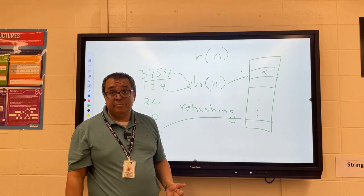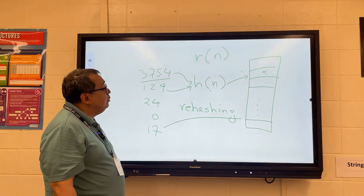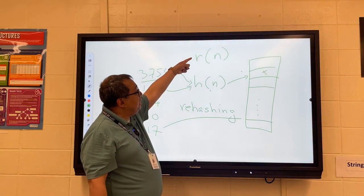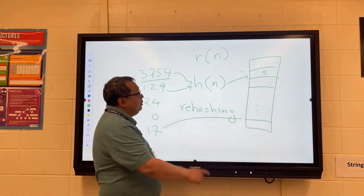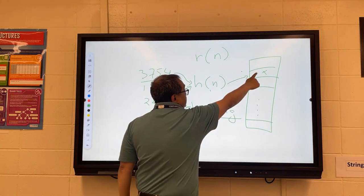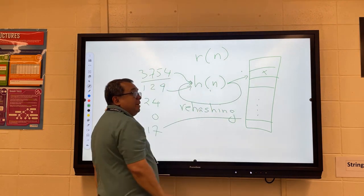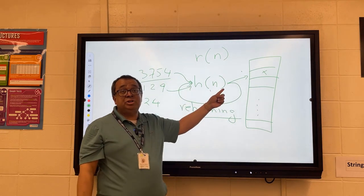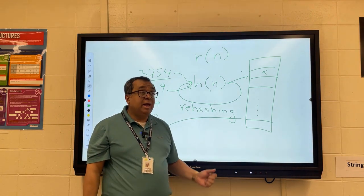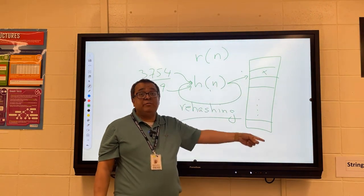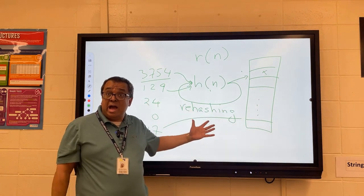And the third possibility that I want to mention is that what we could do is have r of n be h of n. And what that means is that when we get a hash number out here where there's a collision, we could take this number and we can pass it through the same hash function. So we're going to do something called a double hash, and then that will hopefully bring us to a different location. So these are all different possibilities for rehashing.